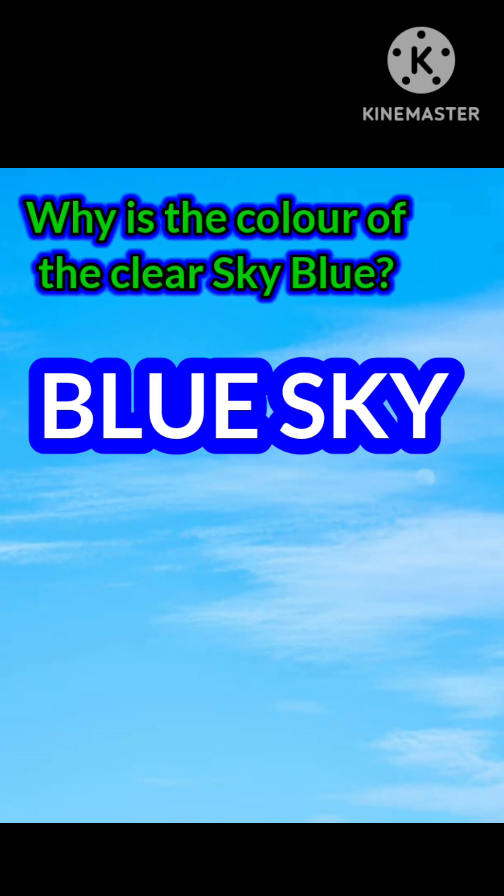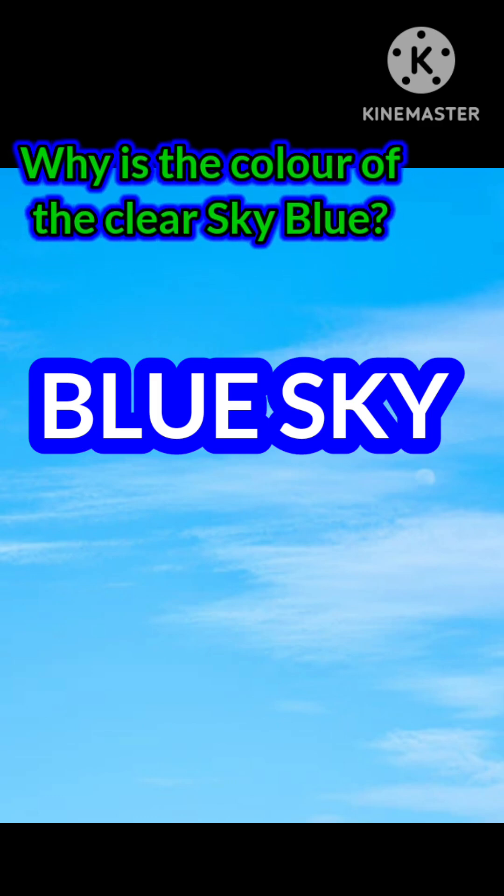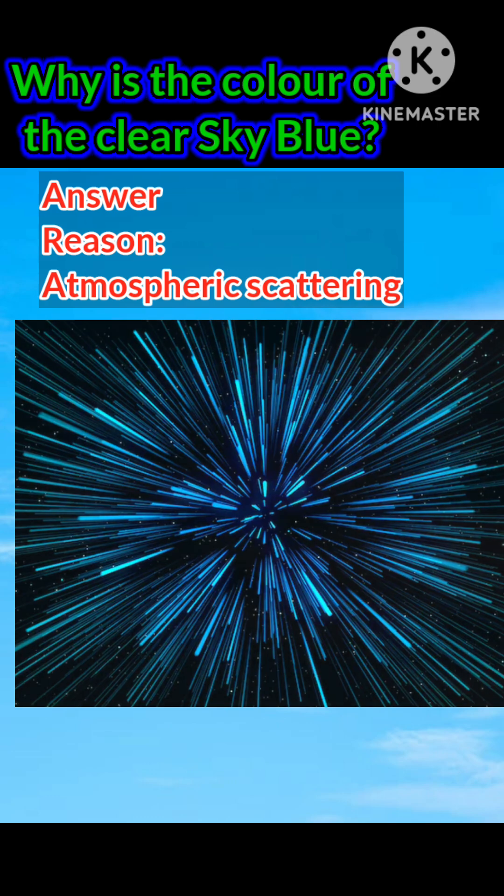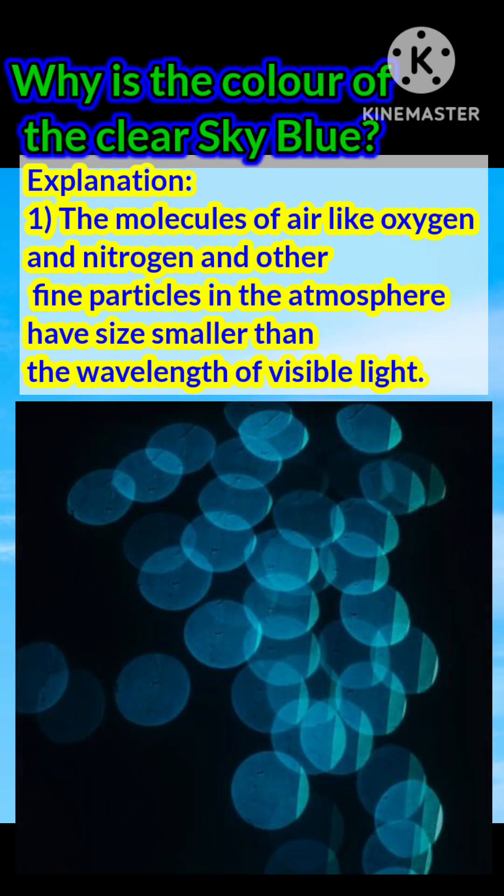Question: Why is the color of the clear sky blue? Answer: Atmospheric scattering. Explanation: The molecules of air like oxygen and nitrogen and other fine particles in the atmosphere have size smaller than the wavelength of visible light.